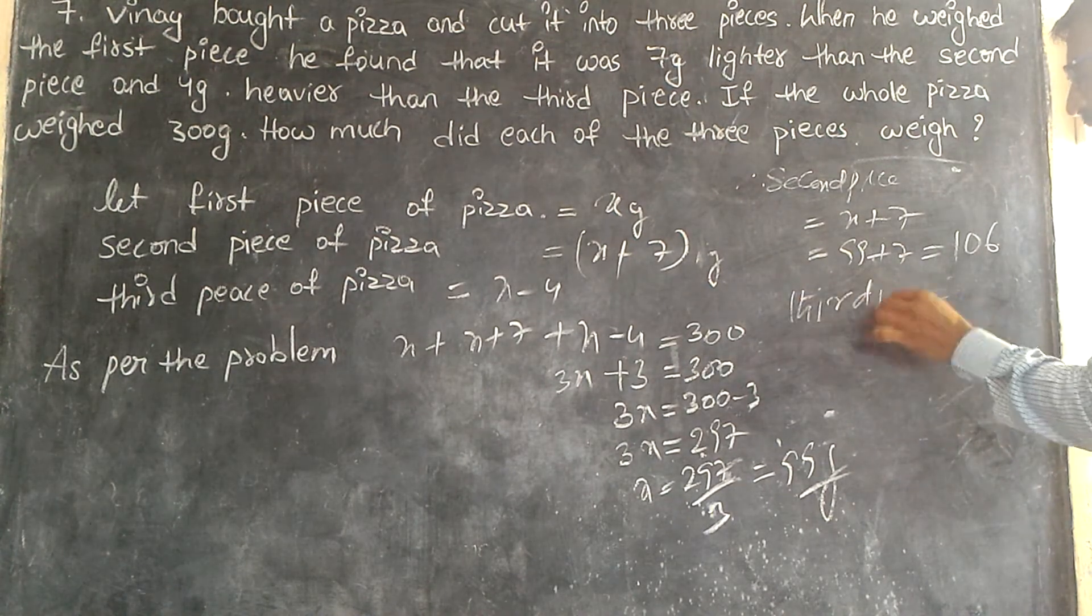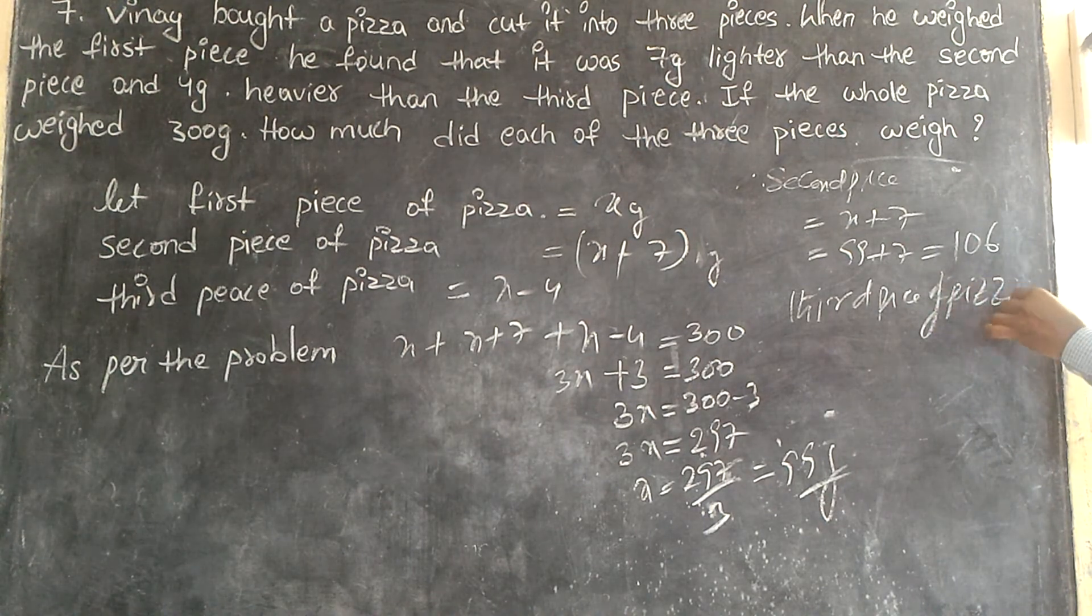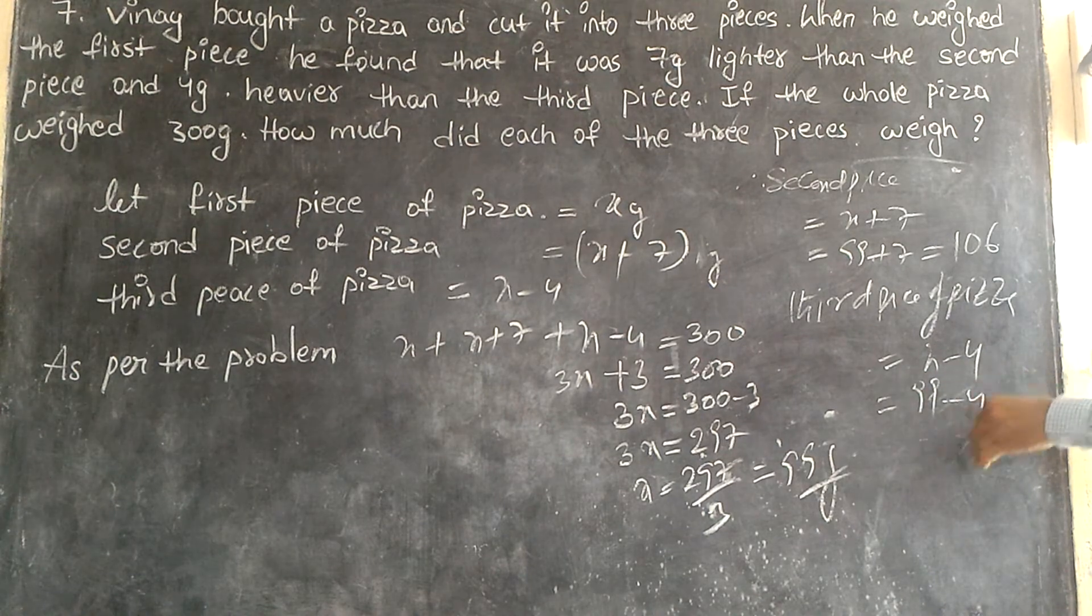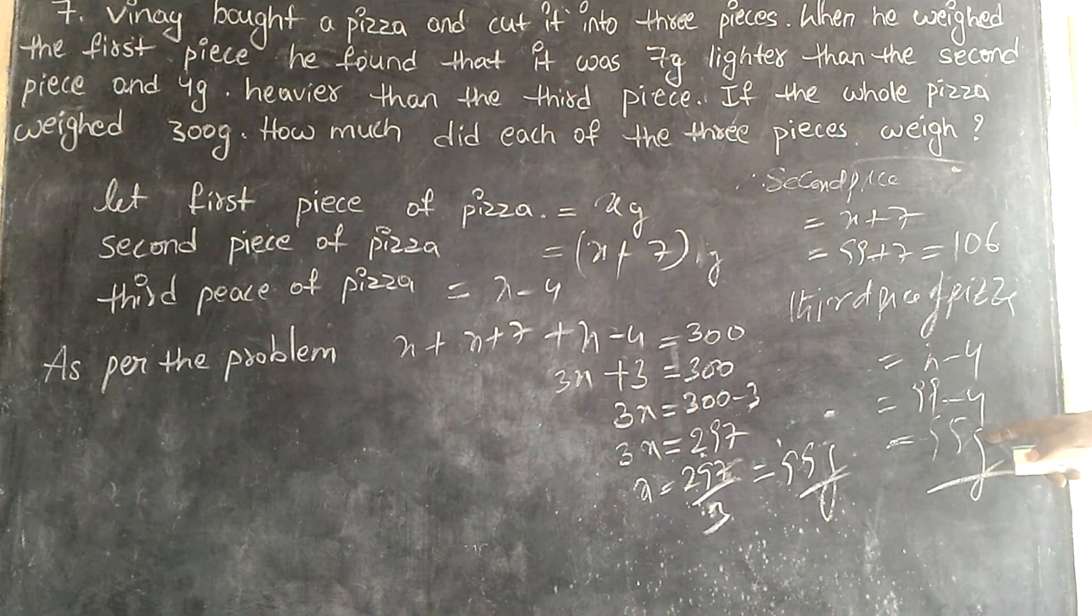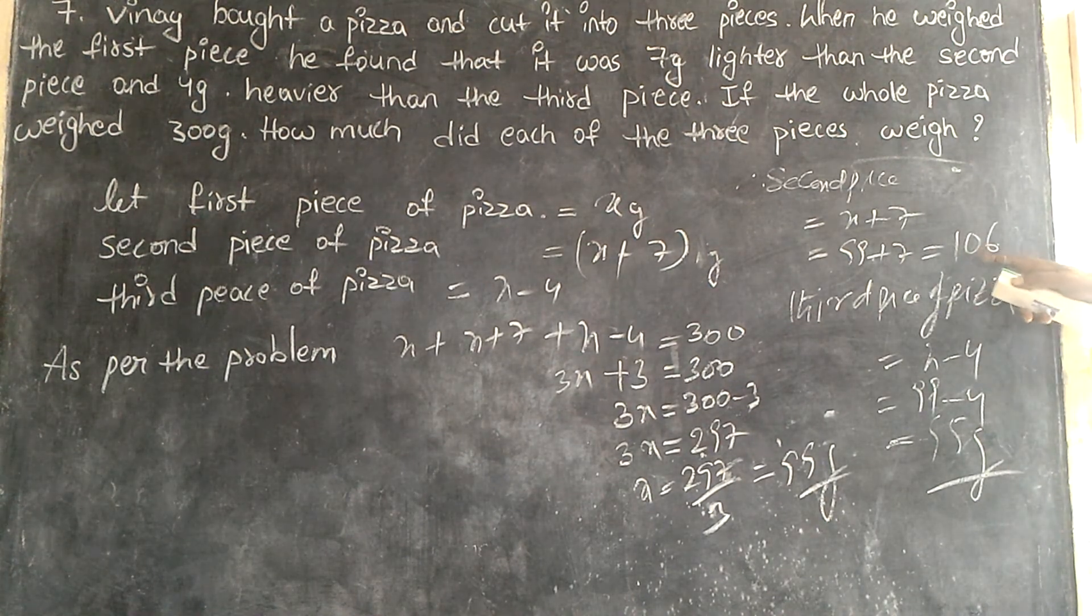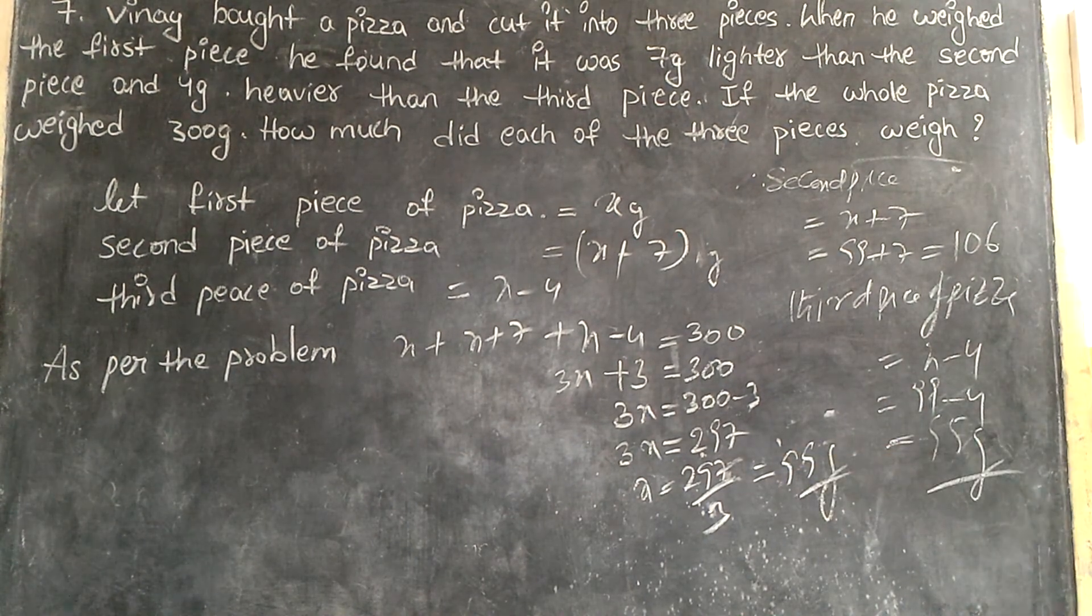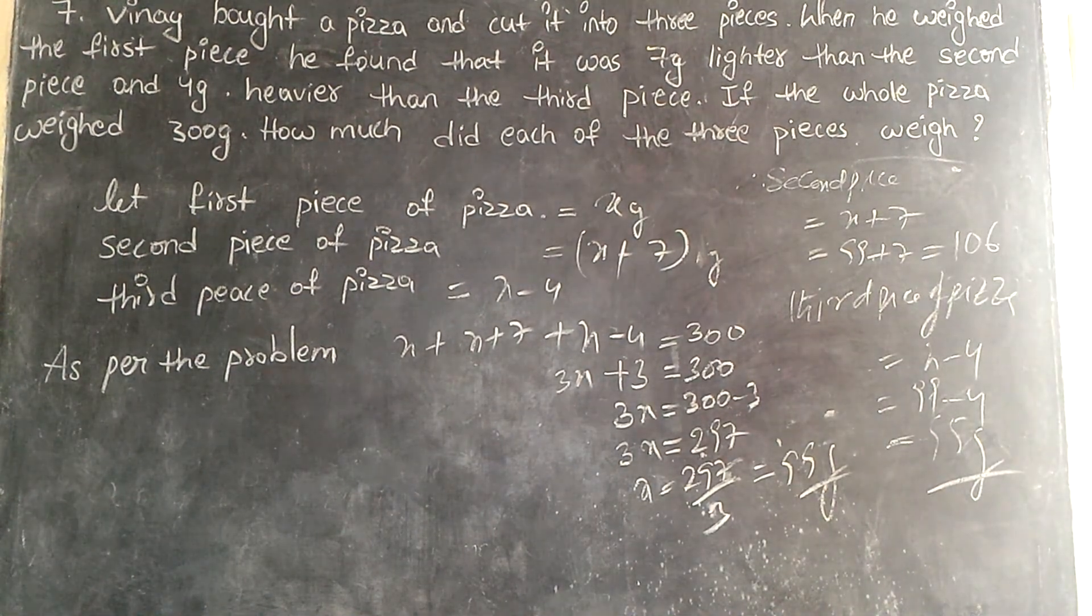Third piece is equal to X minus 4. So 99 minus 4, how much? 95. So this third piece is 95 grams. The second piece is 106 grams. And first piece, how much? 99 grams. Is it clear? Yes.